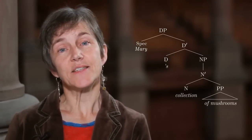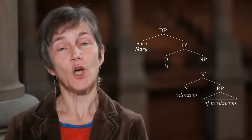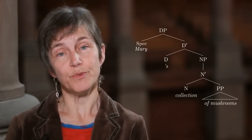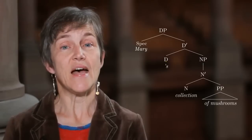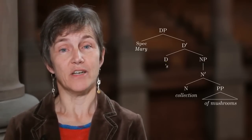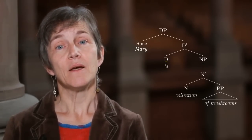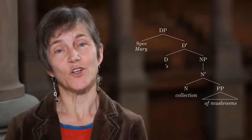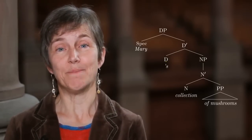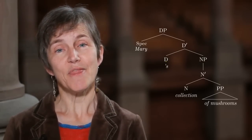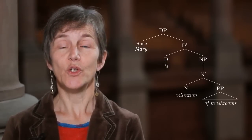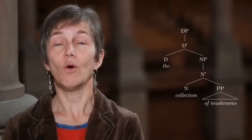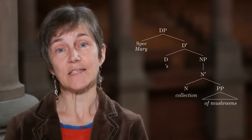This analysis still gives us an explanation for the complementary distribution of determiners like this and that and possessors like Mary's. The whole possessor is not occupying the same position as the determiner, but that little 's element is — so you can have one or the other, but not both. We still retain that explanation.